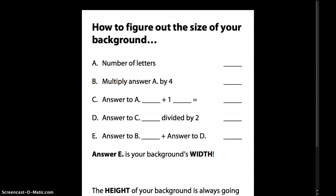Then what you're going to do is take the answer to A which is the number of letters, 7, and you're going to add 1 which is 8. You're going to put that where C is, right here.